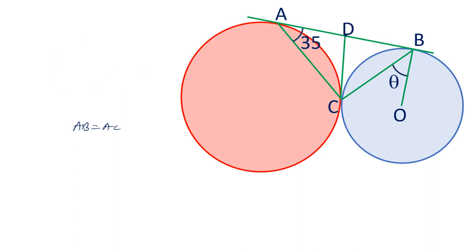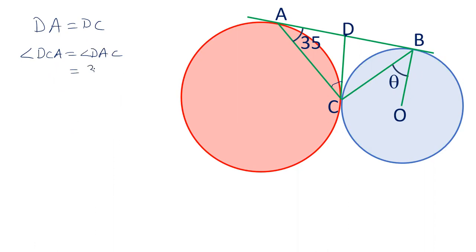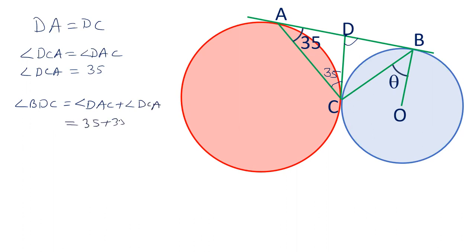Applying this theorem here: D is an external point and DA and DC are tangents, so DA equals DC. If DA equals DC, then angle DCA equals angle DA, which is already given as 35 degrees. So angle DCA is also 35 degrees, making angle BDC equal to 70 degrees.